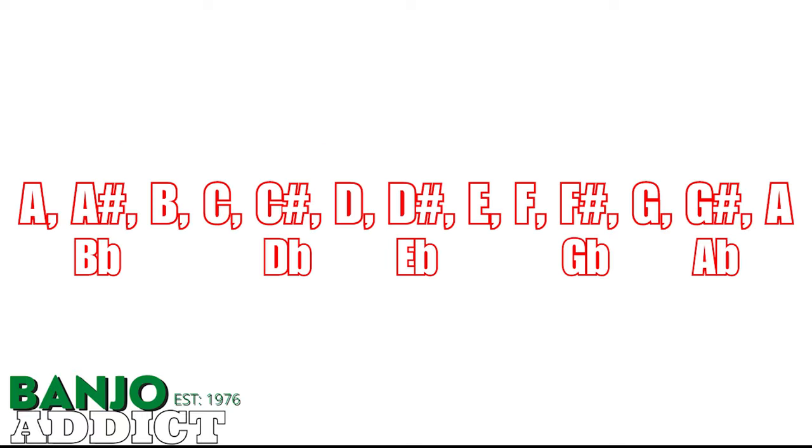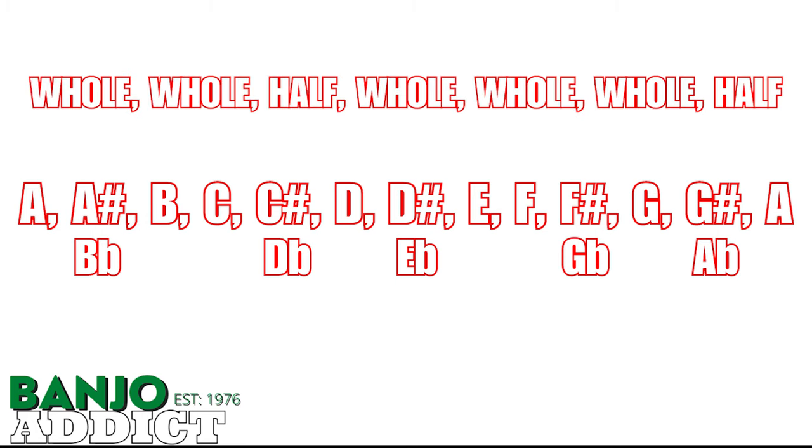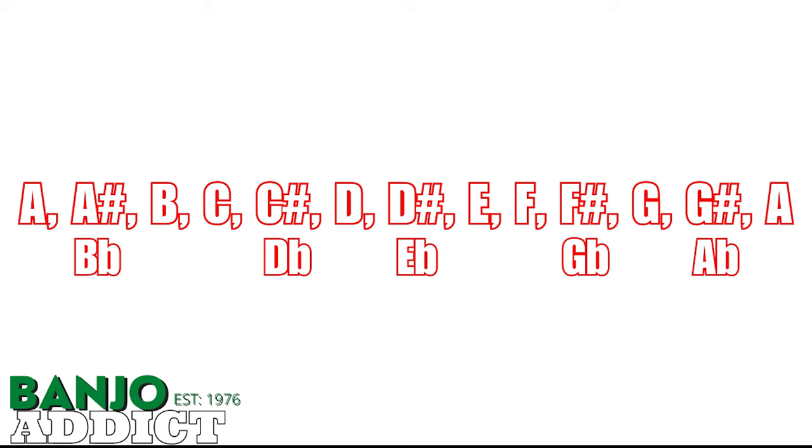One more major scale I want to show you is the D major scale. Now let's figure out what the D major scale is by using the pattern whole, whole, half, whole, whole, whole, half. So again, we will start with the D note since it's the D major scale. So a D, a whole step to an E, a whole step to an F sharp, a half step to a G, a whole step to an A, a whole step to a B, a whole step to a C sharp, and a half step back to D.